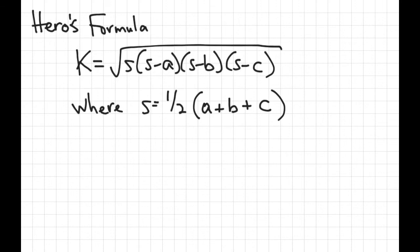Another formula to find the area of a triangle when we don't know the height is Heron's formula. It states that the area equals the square root of s times (s minus a) times (s minus b) times (s minus c), where a, b, and c are the sides of the triangle and s is half the perimeter.